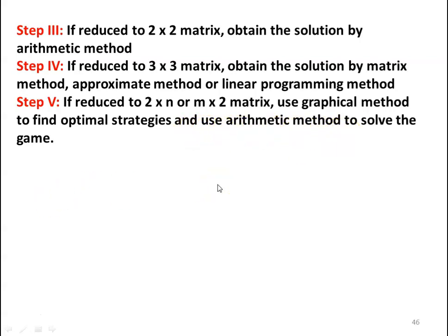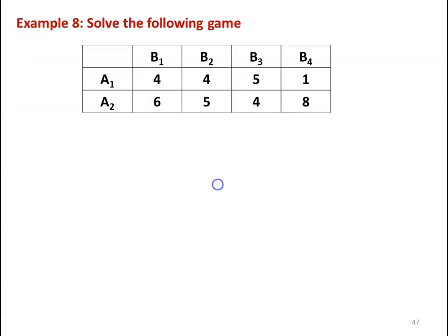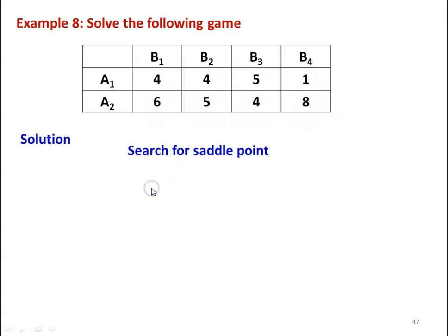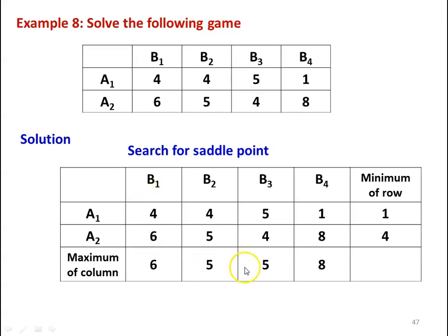Example number 8: solve the following game graphically. There are two players A and B. Player A has 2 strategies and player B has 4 strategies. The payoff matrix values are: row A1 = [4, 4, 5, 1] and row A2 = [6, 5, 4, 8]. The first step is to search for the saddle point by identifying the minimum value of each row and maximum value of each column.